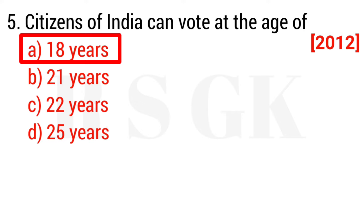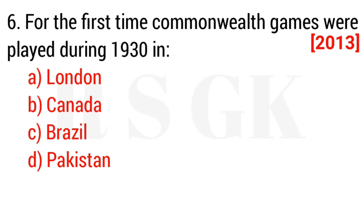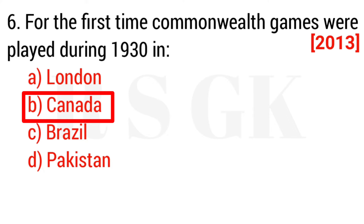Question 5: Citizens of India can vote at the age of — the answer is option A, 18 years. Question 6: For the first time, Commonwealth Games were played during 1930 in — the answer is option B, Canada.